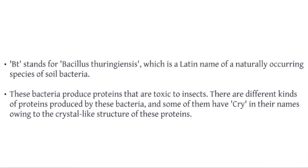BT stands for Bacillus thuringiensis, which is the Latin name of a naturally occurring species of soil bacteria. These bacteria produce proteins that are toxic to insects, and there are different kinds of proteins produced by these bacteria — some of them will have 'cry' in their names because of their crystal-like structure. These proteins are ingested by the insects with plant tissue, bind to insect guts, and interfere with digestion of plant tissues.